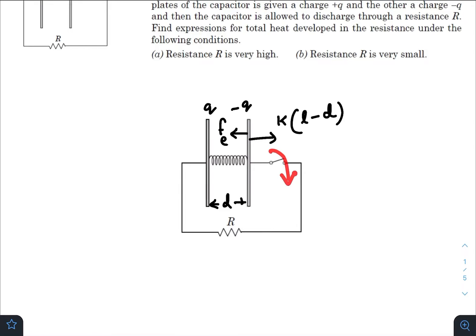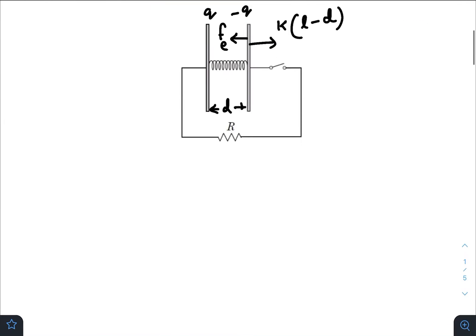Now when the switch is turned on, these charges will try to flow through this resistance, hence it will result in heat dissipation. We have two conditions in our hand: where R is very high and R is very small. So let us analyze what happens when R is very high.